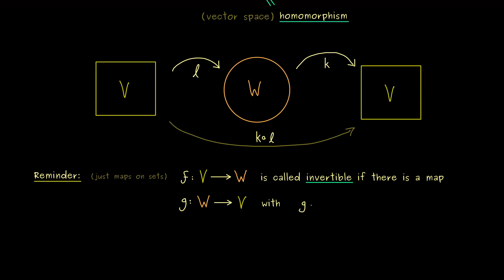This means g after f is the identity map. More precisely the identity map on the set V.